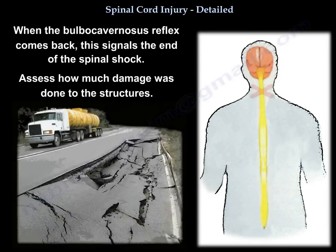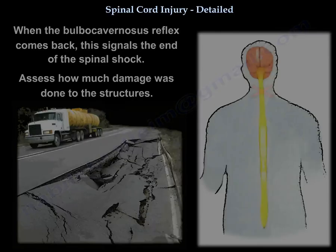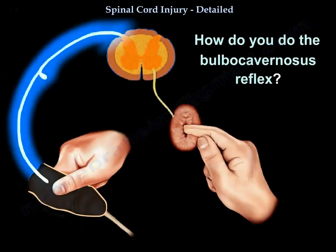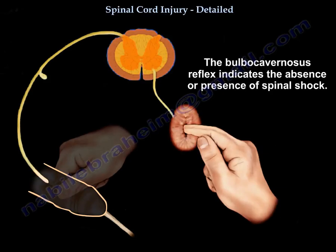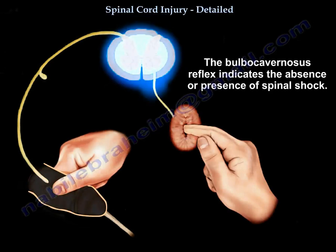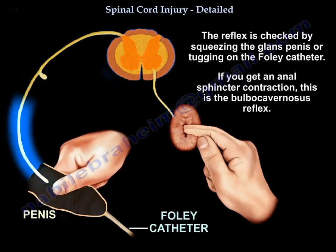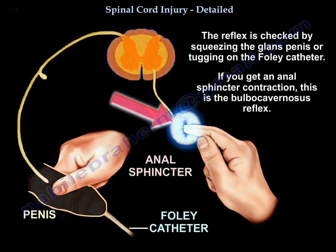Now we assess how much damage to the roots and structures - like assessing damage to the highway. We try to establish the connection: is there an internet that is functional? The brain controls everything; it sends a signal and we see if that signal reaches the injured area. The bulbocavernosus reflex indicates the absence or presence of spinal shock. You squeeze the glans penis or tug on the Foley catheter - if you get an anal sphincter contraction, that is the bulbocavernosus reflex.